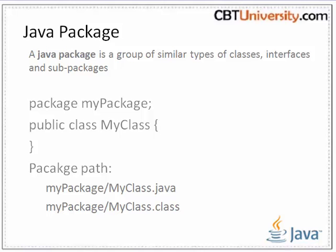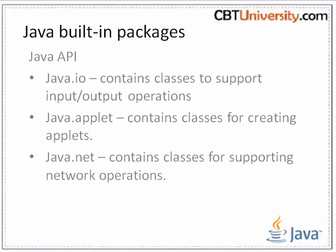Classes with the public access modifier must be placed in files with the same name and .java extension, and put in nested folders corresponding to the package name. The above class mypackage.MyClass will have the following path: mypackage/MyClass.java or MyClass.class.